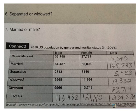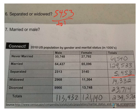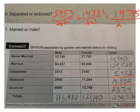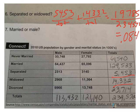Six and seven deal with the word 'or.' Number six: separated or widowed. Separated is 5,453 out of the total. We add to that the widowed, which is 14,332 over the total. Notice you cannot be separated and widowed — there's no overlap. So we have a total of 19,785 over 234,572, giving a decimal of .084. So 8.4% of U.S. citizens are either separated or widowed.